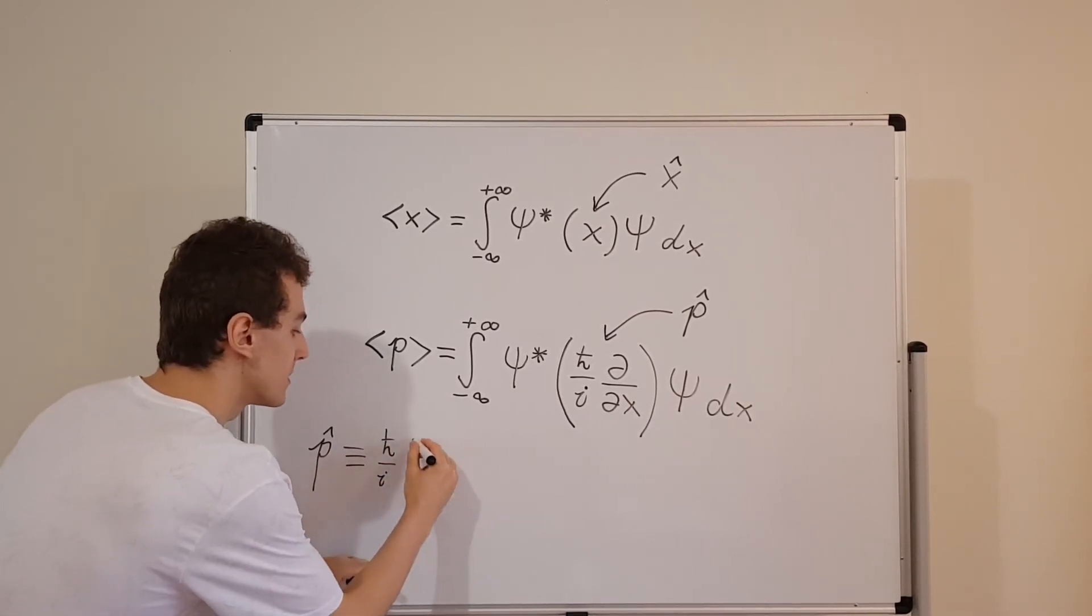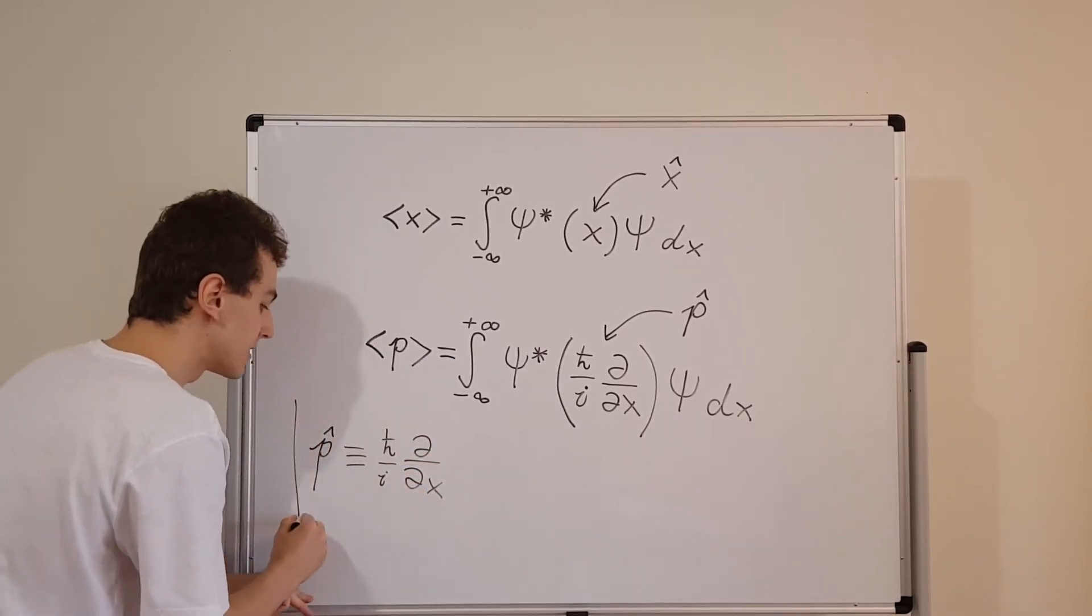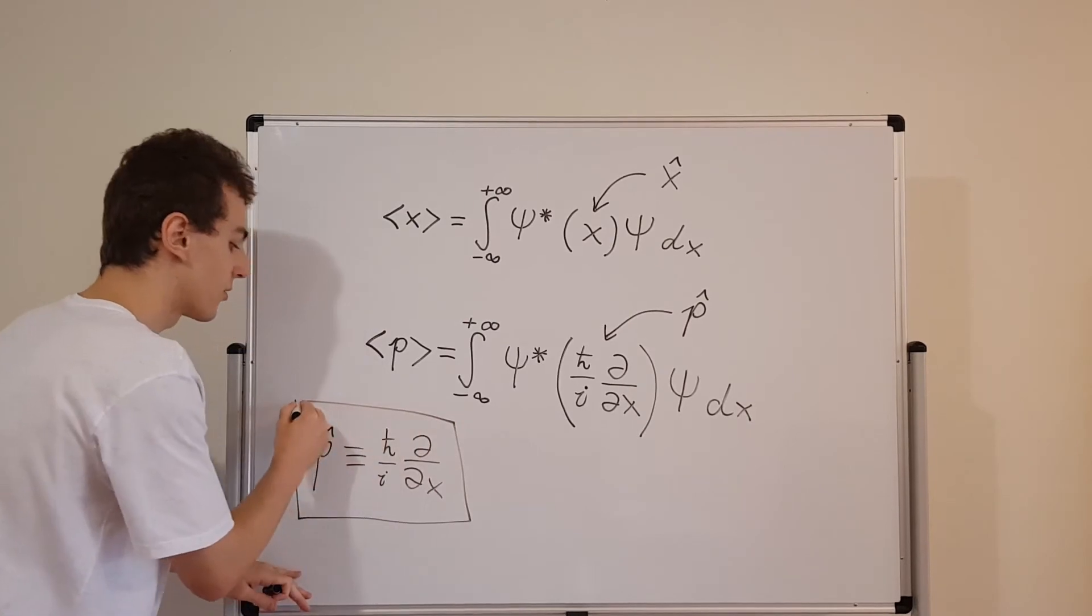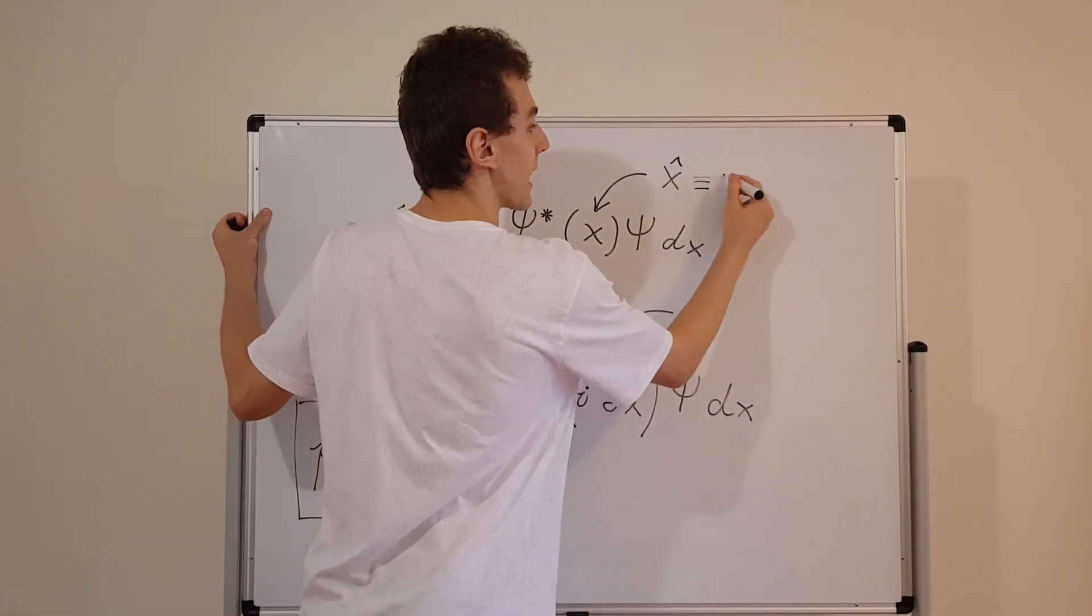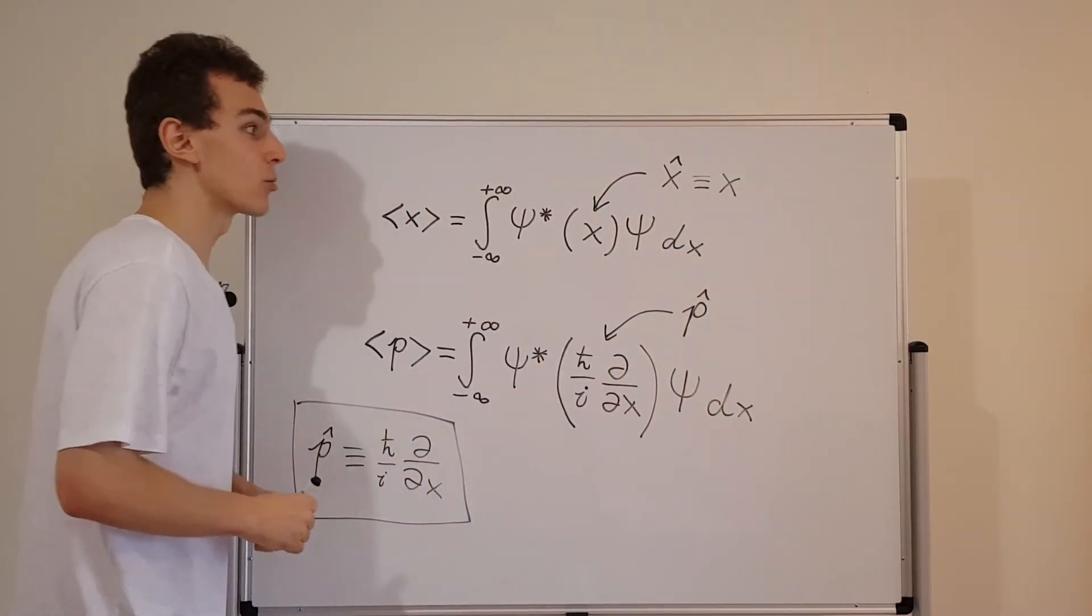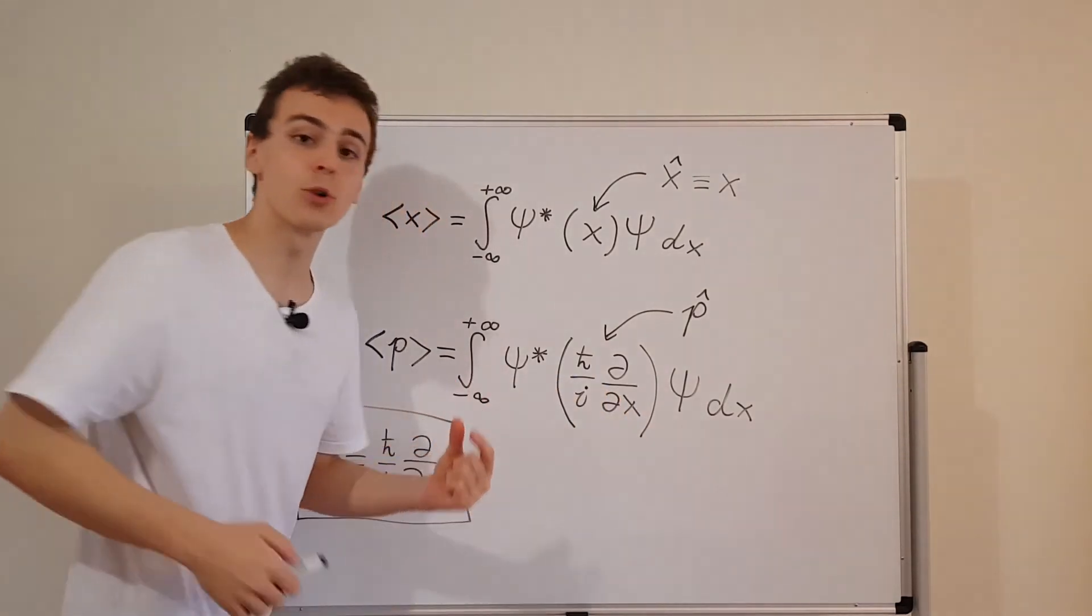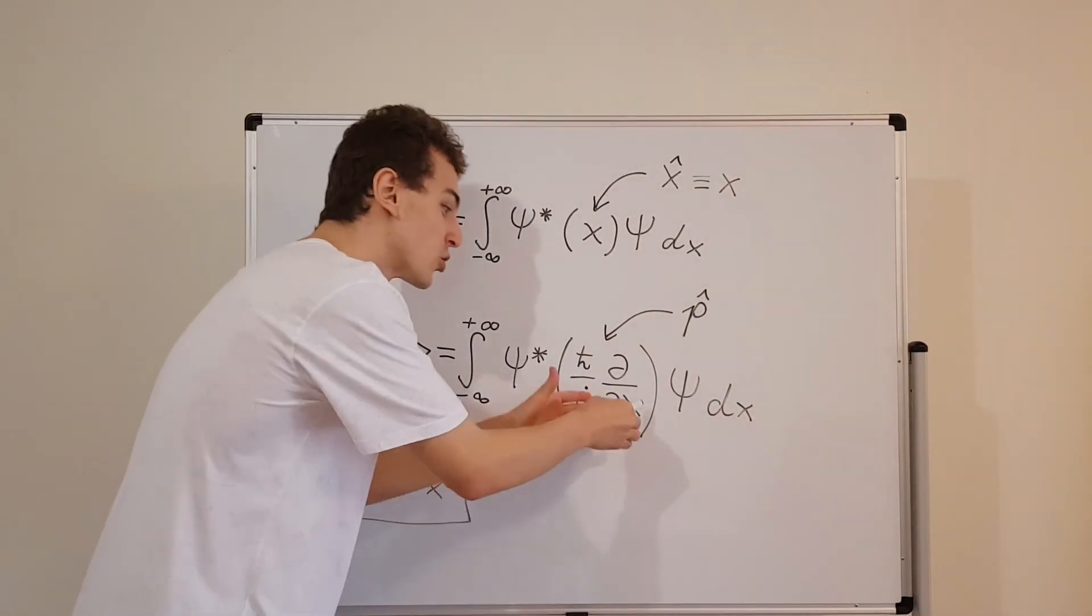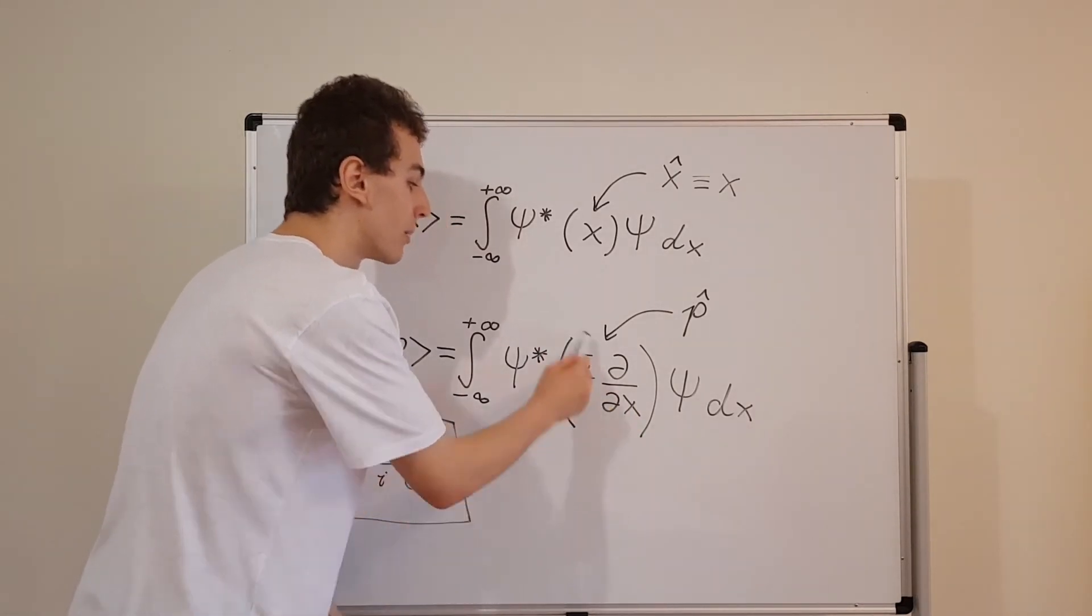h bar over i times this partial derivative with respect to x. And we're going to be using this in later videos as well. So this is very important. This operator is just equivalent to multiplying by x. So the operator that represents x is equivalent to just multiplying by the variable x. But momentum is a little more complicated. You have to take the partial derivative with respect to position, and then you have to multiply by this constant.